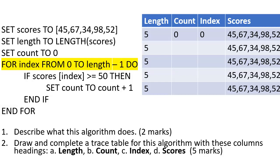So now I'm looking at this for loop: for index from zero to length minus one do. So what's happening here is it's saying from index zero to the length of the array, which is five, take off one which is four, because array indexing starts at zero. We go zero, one, two, three, four, which gives us the five elements of the array. Now I'm going to look at this condition: if scores index is greater than or equal to 50, then set count to count plus one. Now 45 is not greater than or equal to 50, so count stays at zero there.